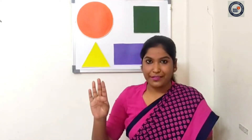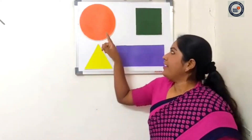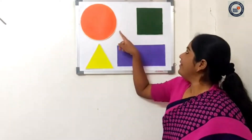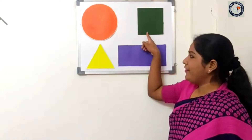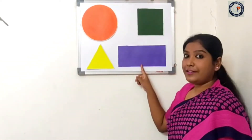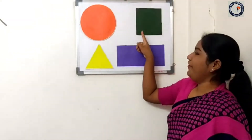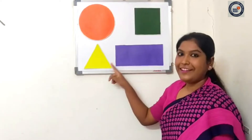So in your previous class you have learned about four shapes. Yes, four shapes. What was that? Circle, square, triangle, rectangle. You have learned circle, square, triangle, rectangle. Yes children. Okay, you have learned it. Right?